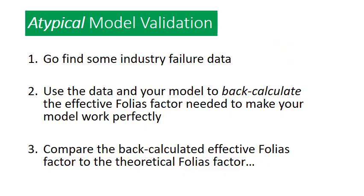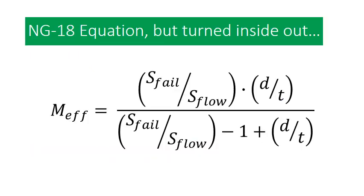Now I'm going to talk about what I call my atypical model validation. It starts the same way — you go and find some industry failure data. The second step takes a turn: you use that data and your model to back-calculate what would be the effective Folias factor needed to make your model work perfectly. You've got all the numbers from your data, you've got the equation, you just need to twist that equation around and back-calculate an effective Folias factor. If you then take that back-calculated Folias factor and compare it to the theoretical one from ASME B31G, that should match up pretty well, shouldn't it?